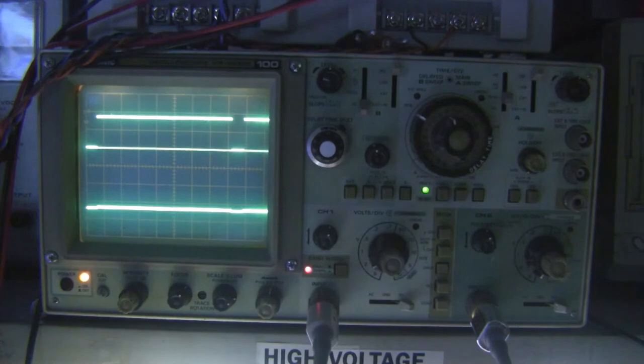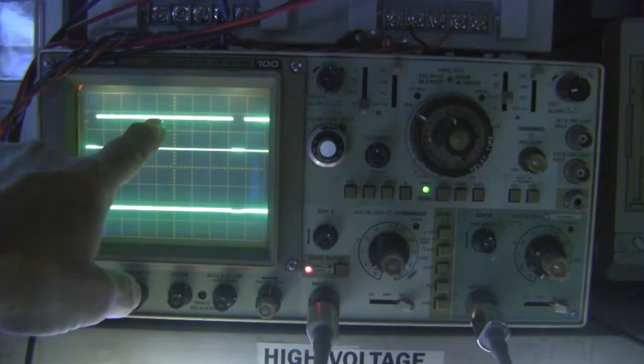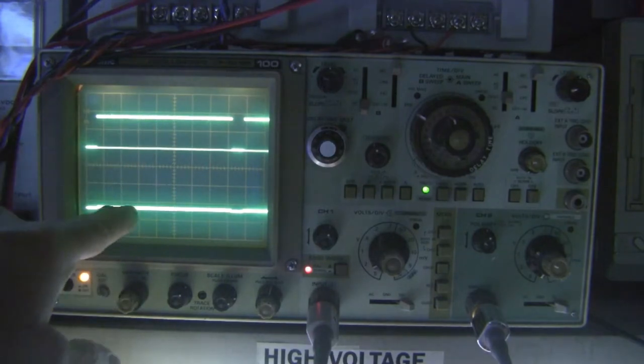The upper trace is the composite blanking signal, and you can see the two gaps, one on the left side and one near the right side, which represent the vertical retrace time. Note the squareness of this signal.